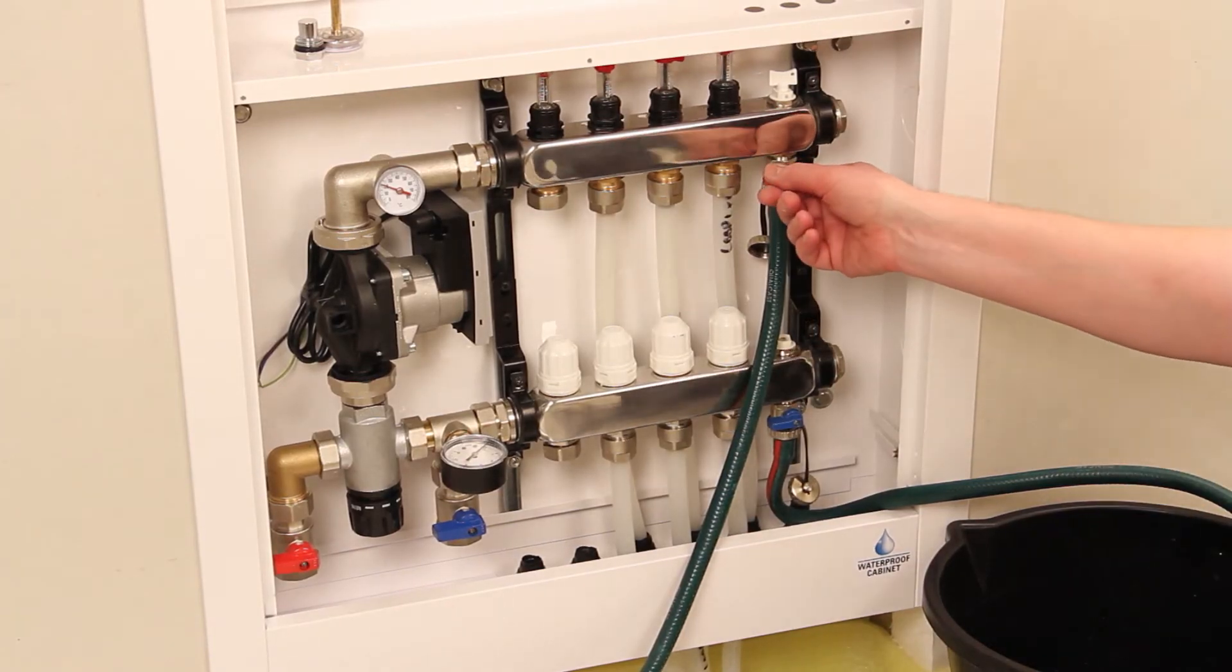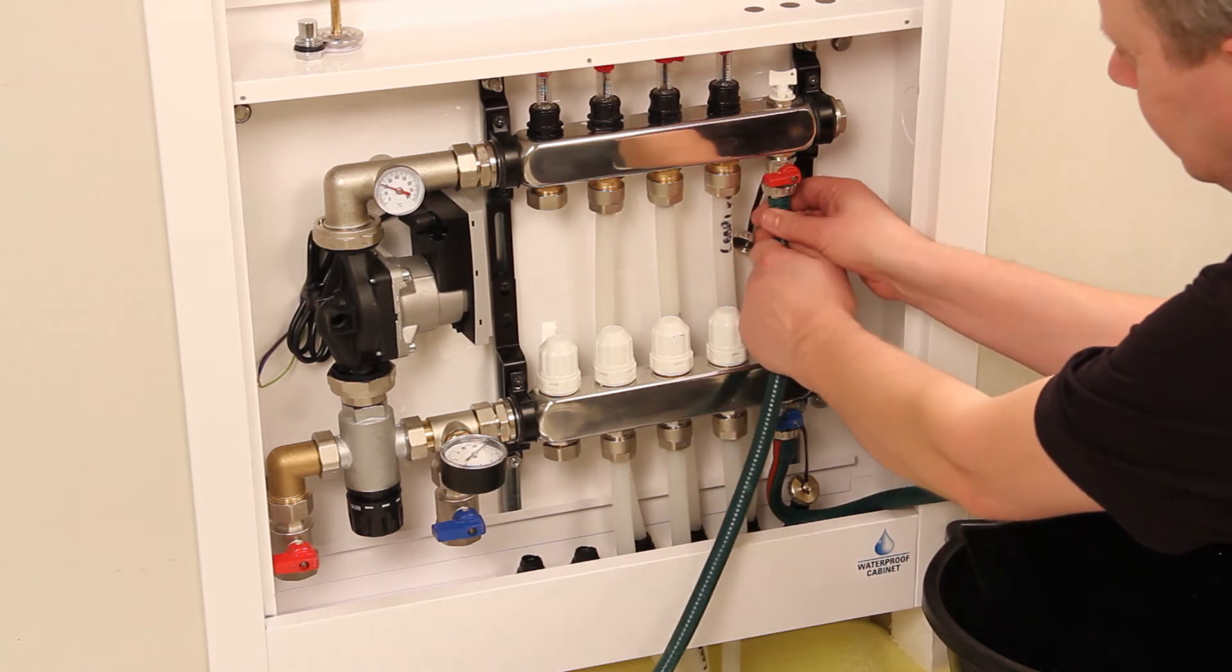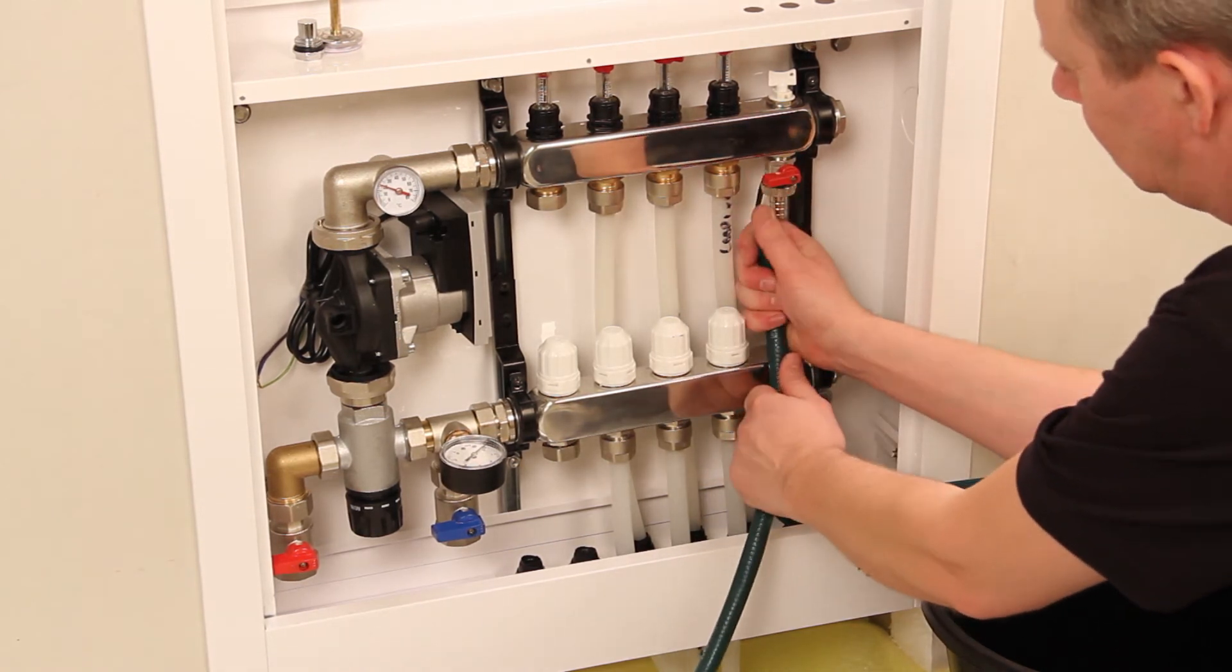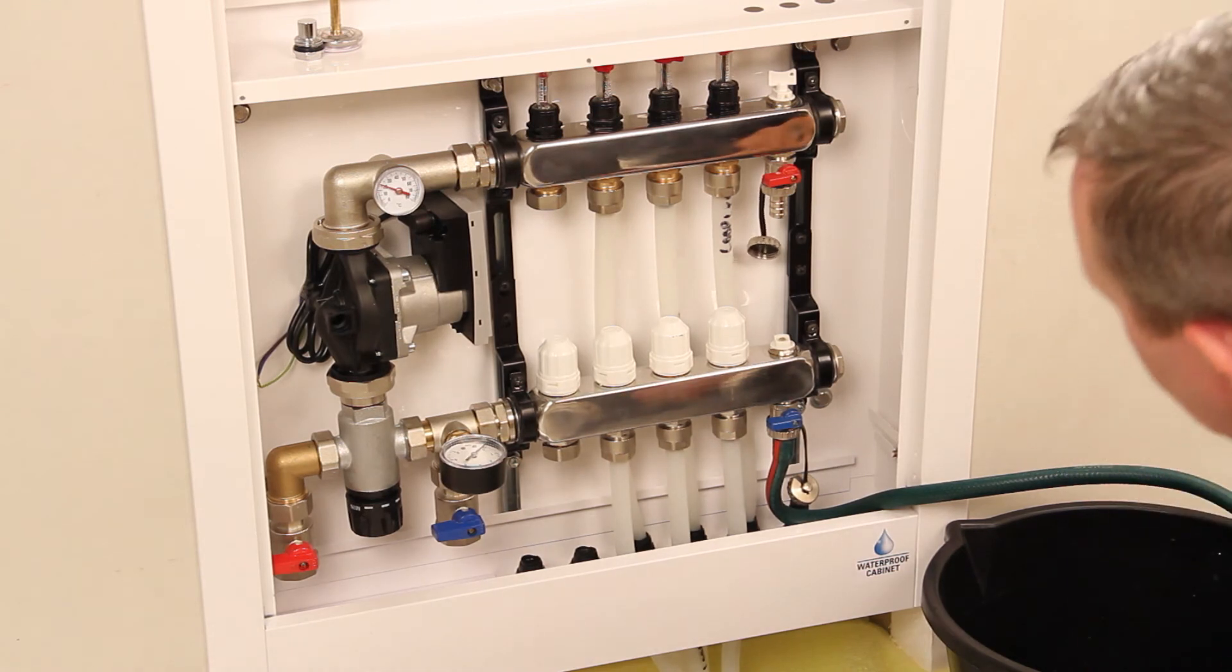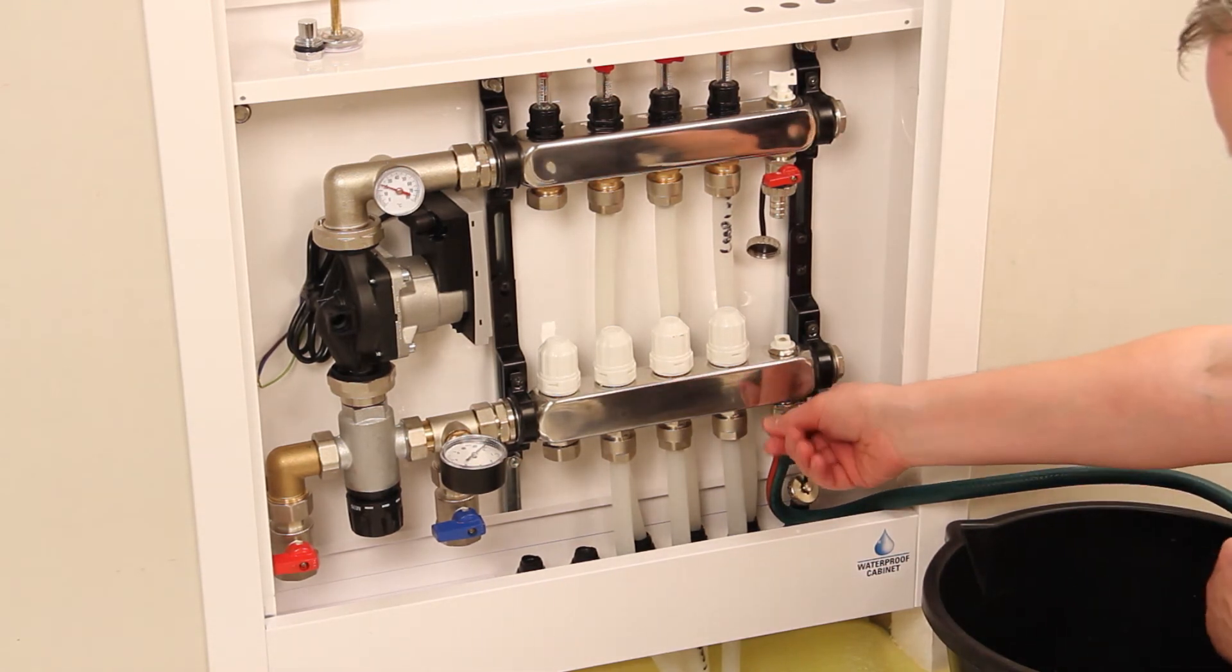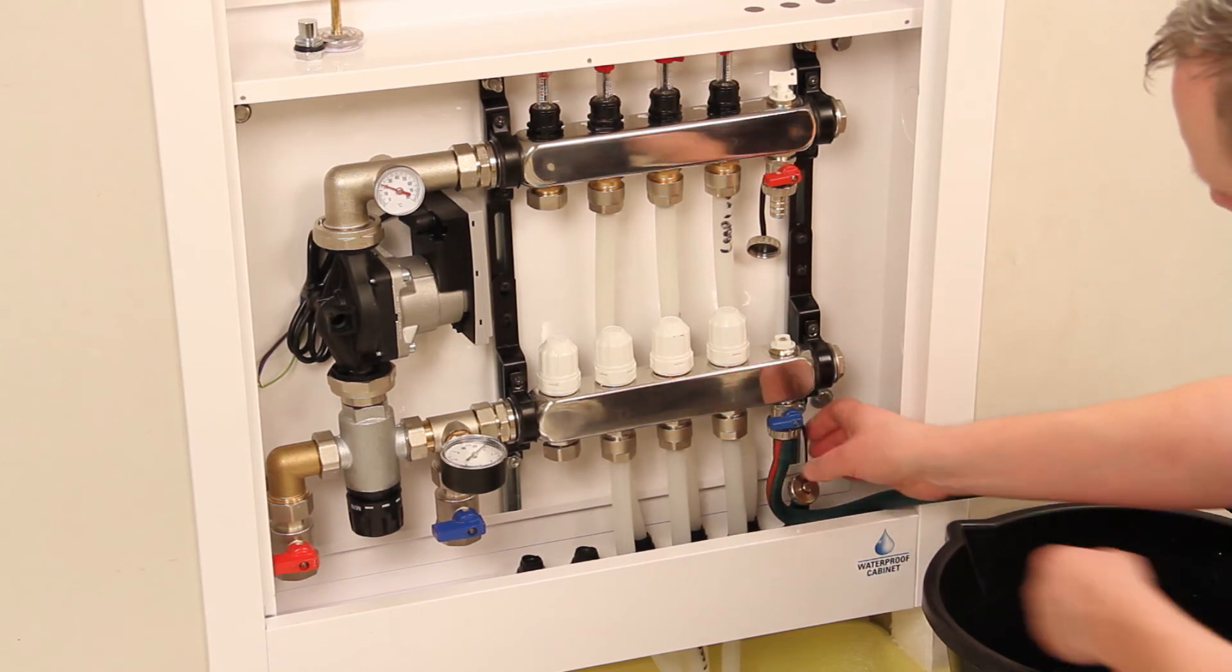When the pressure test is complete, the cold mains water supply hose can be removed and the pressure released by briefly opening the drain off tap via the hose into a bucket. Once the pressure has been released, close the drain off tap.